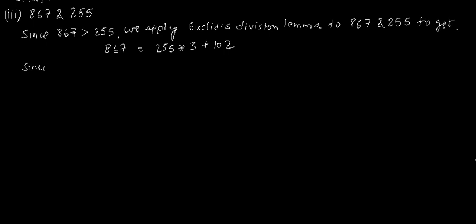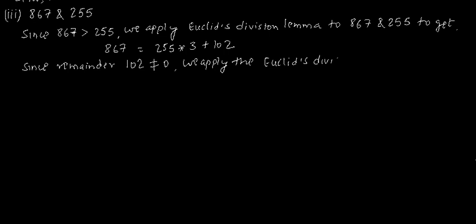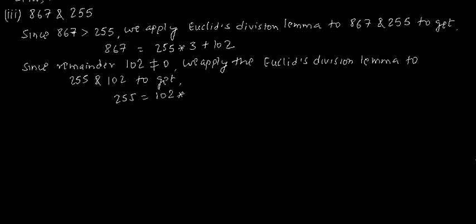Again, since the remainder, that is 102, is not equal to 0, we apply Euclid's division lemma to 255 and 102 to get 255 = 102 × 2 + 51.